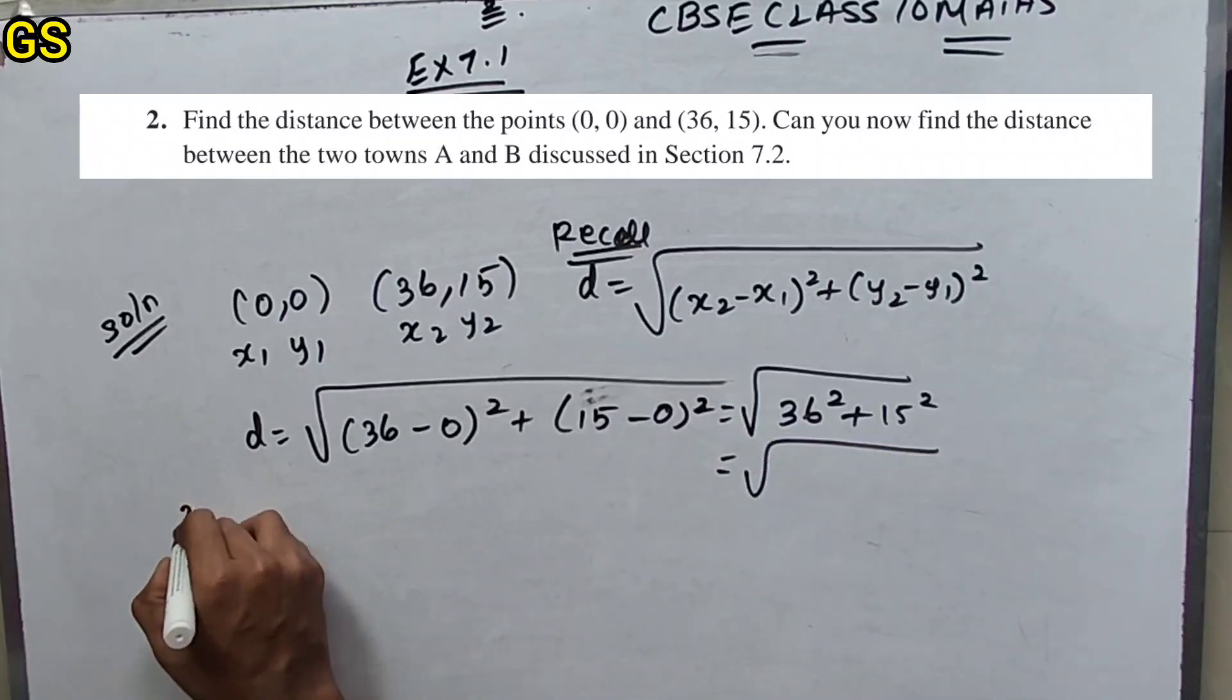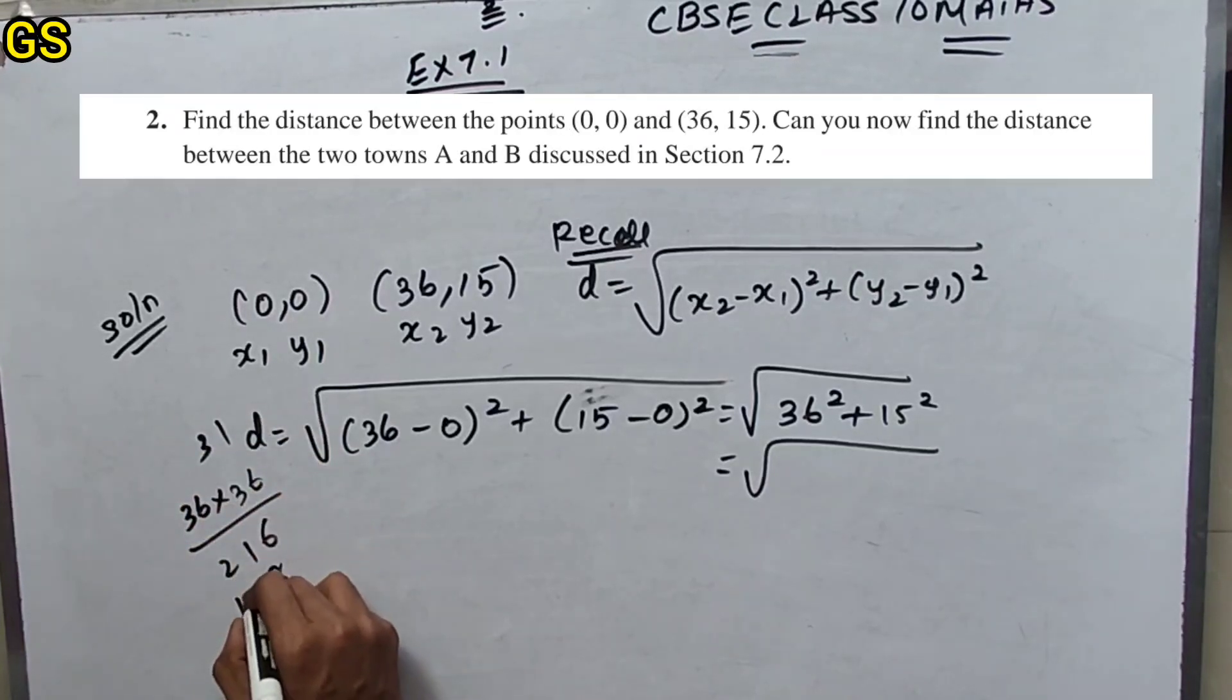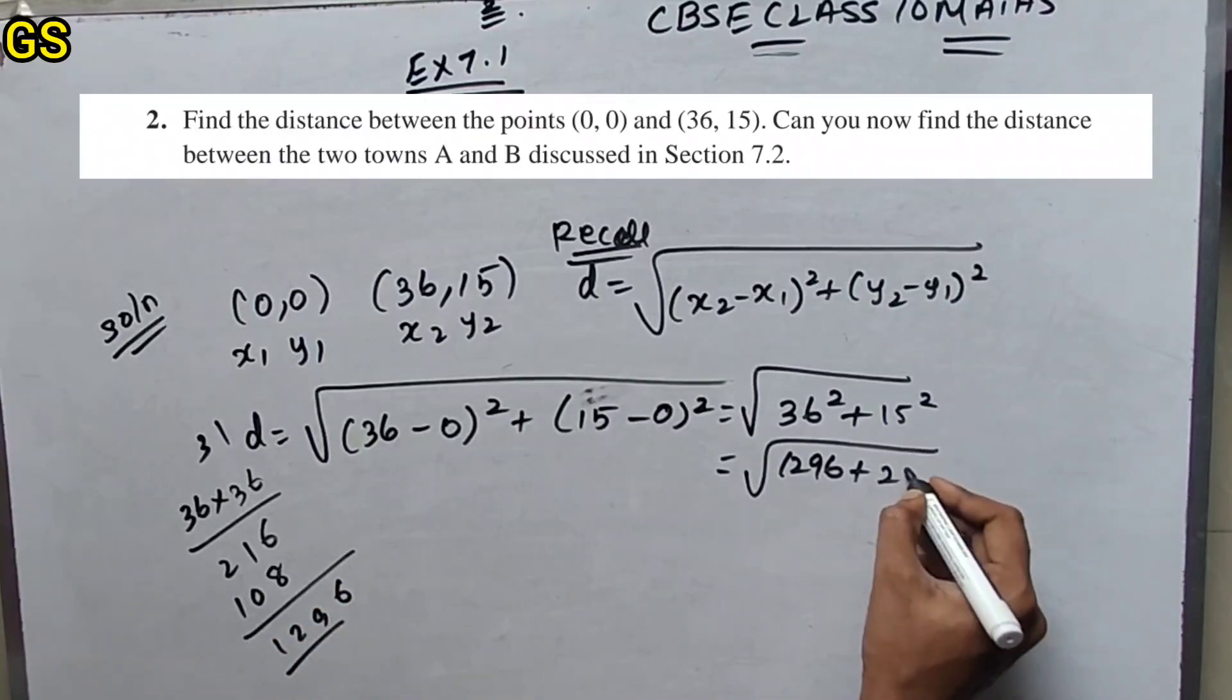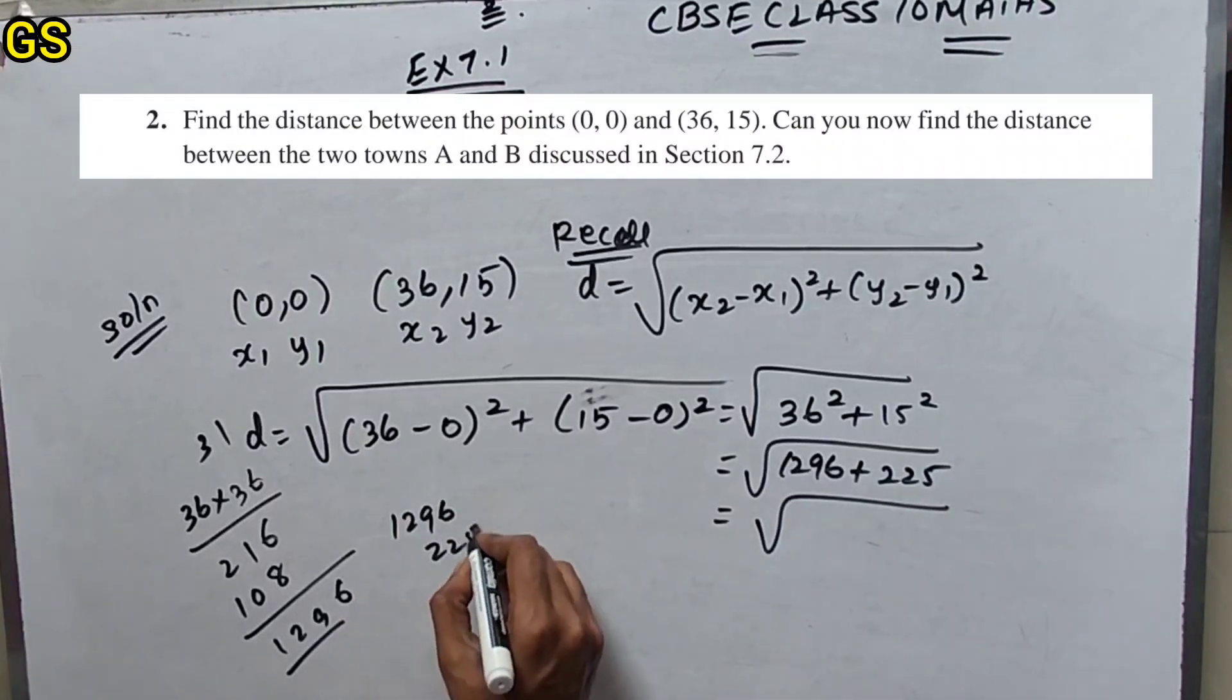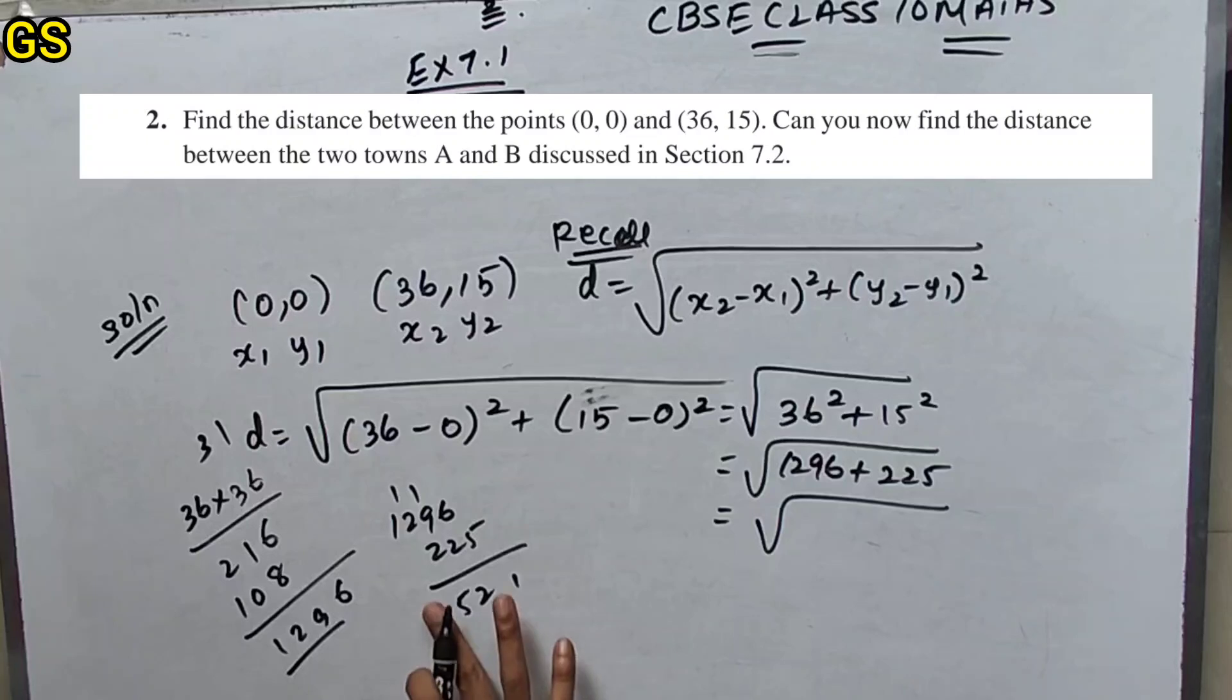36 square is 36 times 36, which equals 1296. 15 square is 15 times 15, which equals 225. So we add: 1296 plus 225, which gives us 1521.